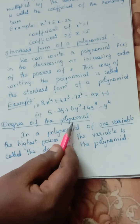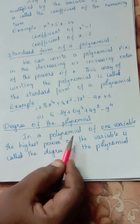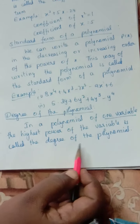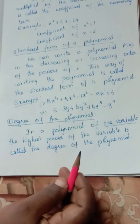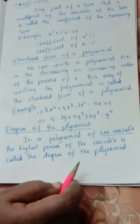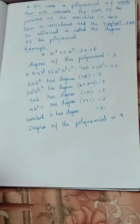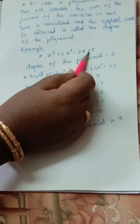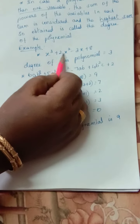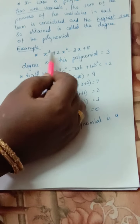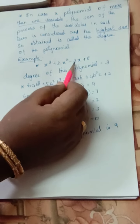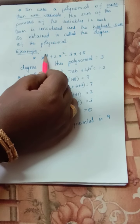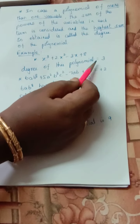Next, degree of the polynomial. In a polynomial of one variable, the highest power of the variable is called the degree of the polynomial. For example: x³ plus 2x² minus 3x plus 8. Here only x is the variable. Among the x terms, the powers are 1, 2, and 3 — so the highest power is 3. Therefore the degree of this polynomial is 3.